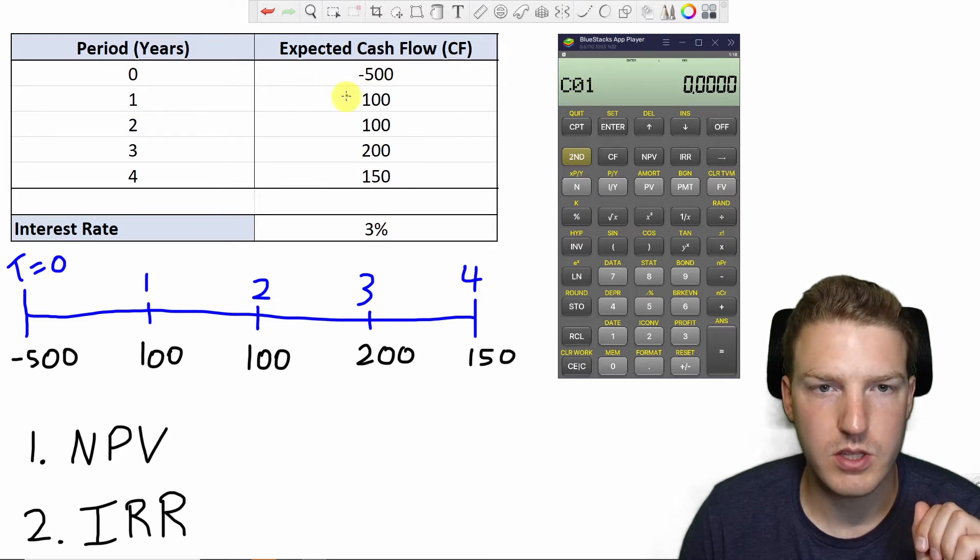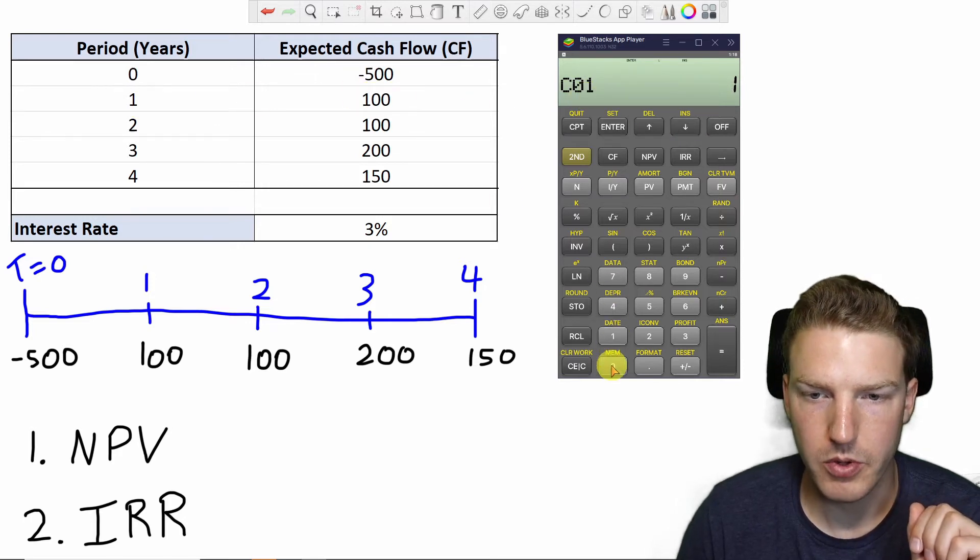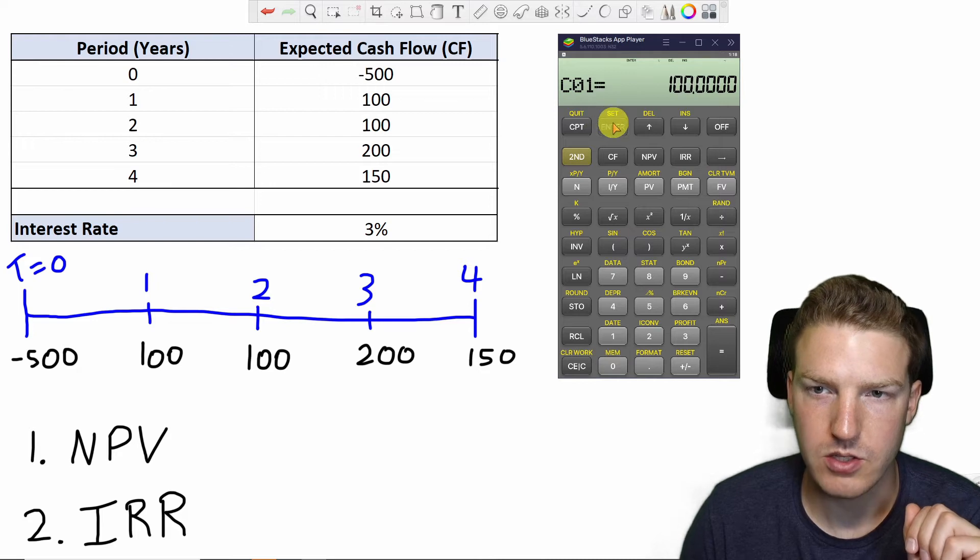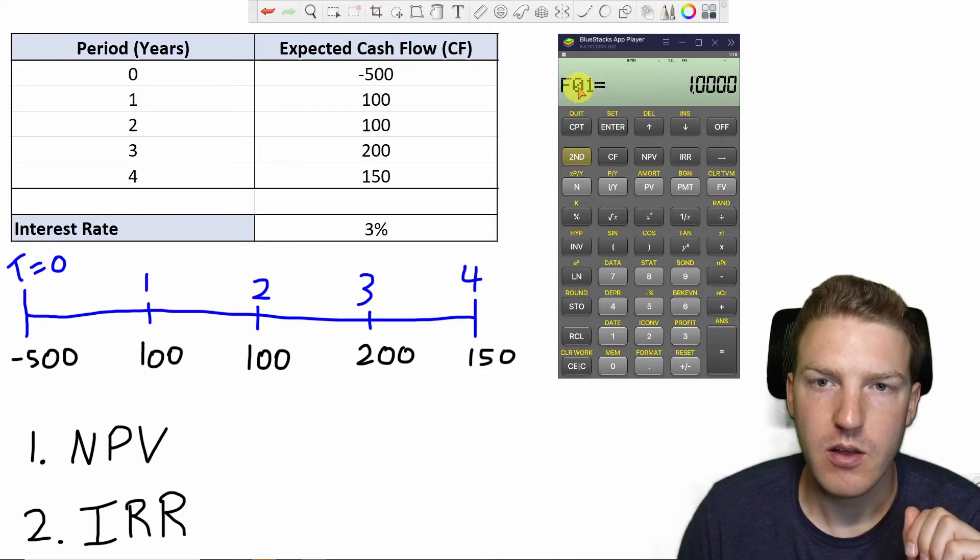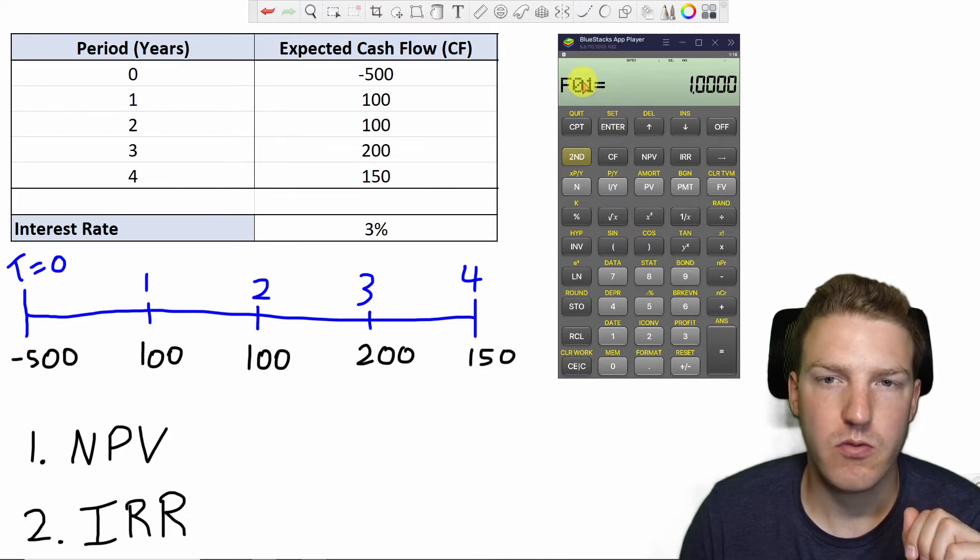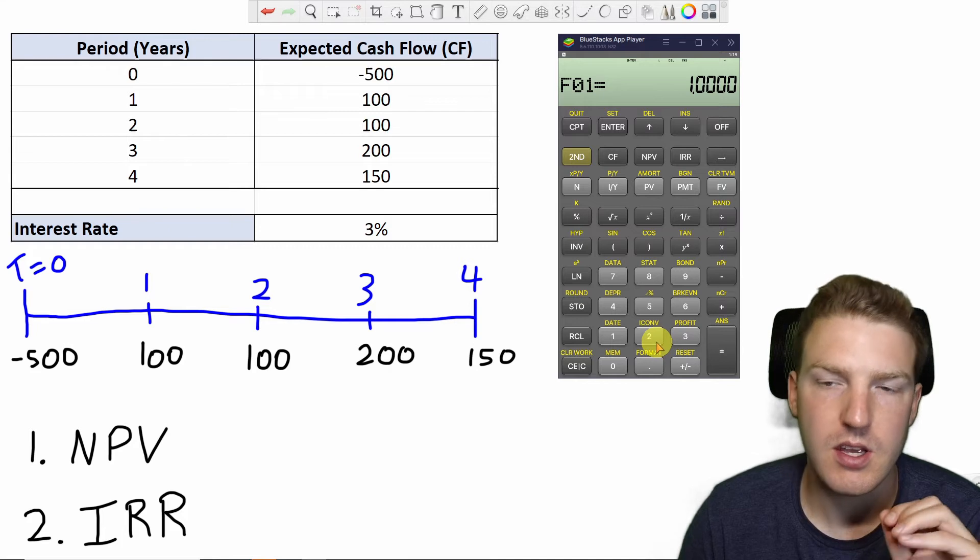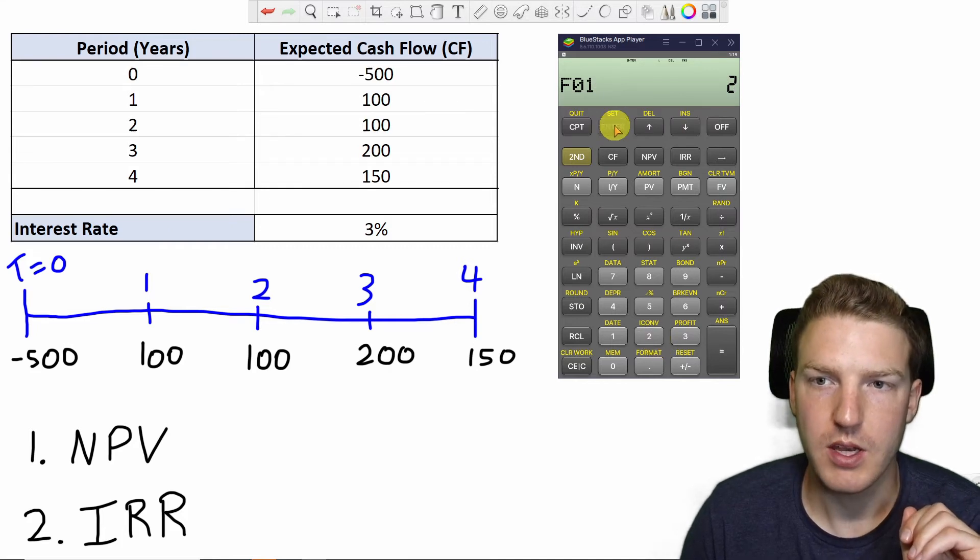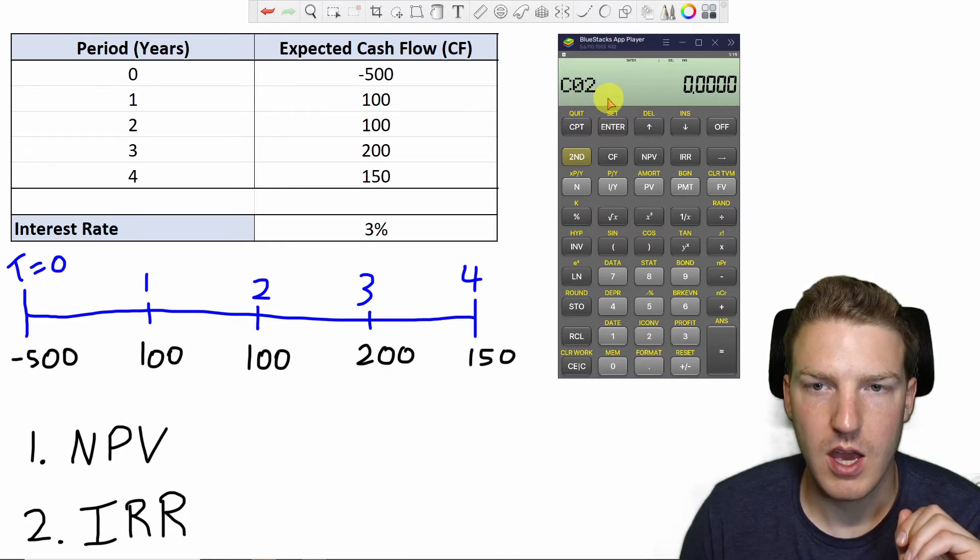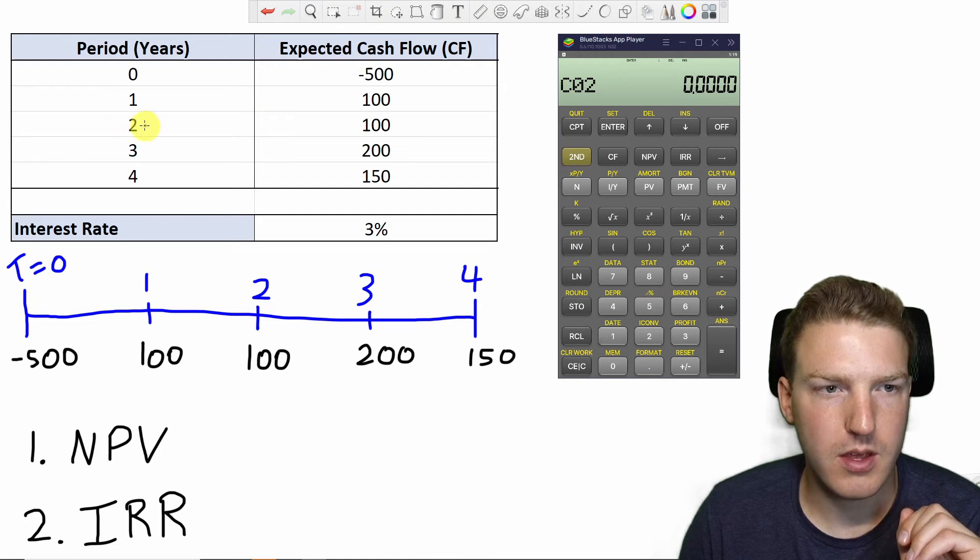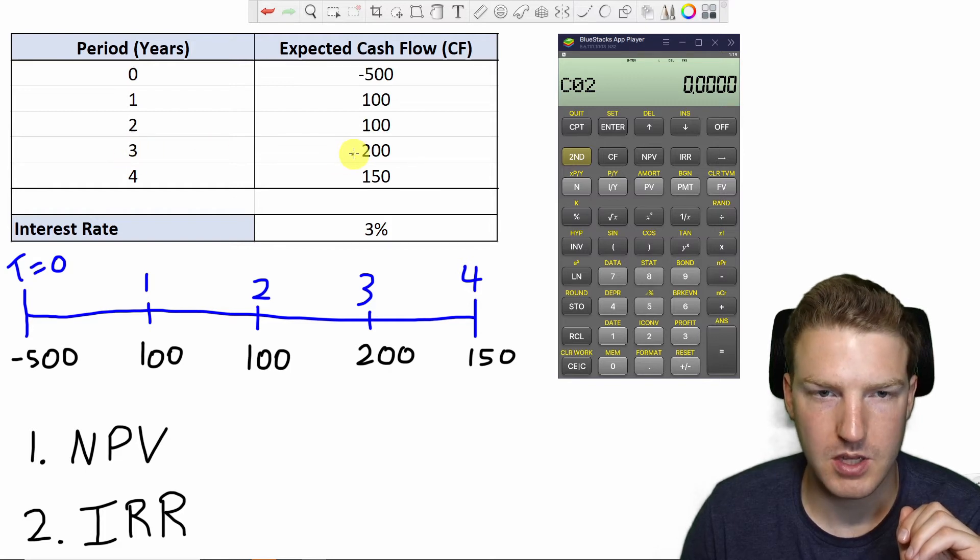Now for cash flow one, we can see it's a $100 value. We'll put in $100, enter. But now that we see F01, that is the frequency of cash flow one. And because we can see we get $100 twice in a row, we can actually put this at two. So we'll hit enter. And now we'll go to cash flow two. So normally we would think that this is cash flow two, but because the last one had a frequency of two,